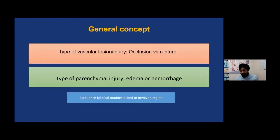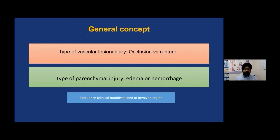As a general concept, since the cardiovascular system is a closed system, there are two basic types of injuries that can happen to a vessel. One, there could be occlusion to forward flow — that is defined as ischemic stroke. The second is a rupture of this closed system, making it open, which leads to hemorrhage — and in the case of the brain, it's a brain hemorrhage.